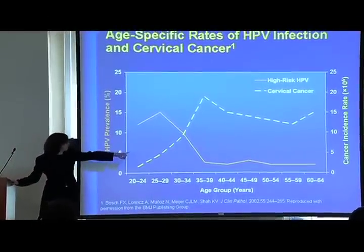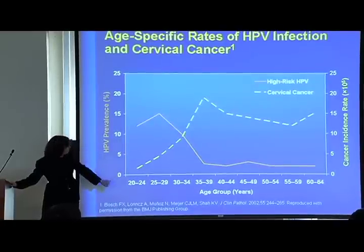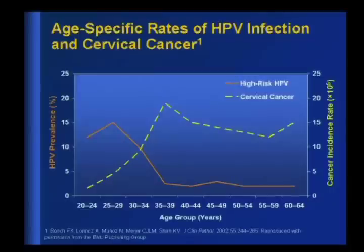HPV prevalence drops significantly in the 30s, while cervical cancer rates start increasing. We think it's the persistent HPV infections—only a small percentage of which will go on to develop cancer—that matter. We don't know why some people clear HPV and others don't, or why persistence sometimes causes cancer and sometimes doesn't.